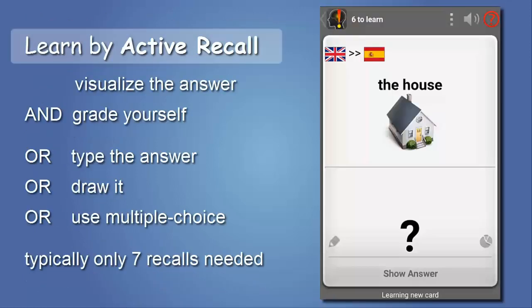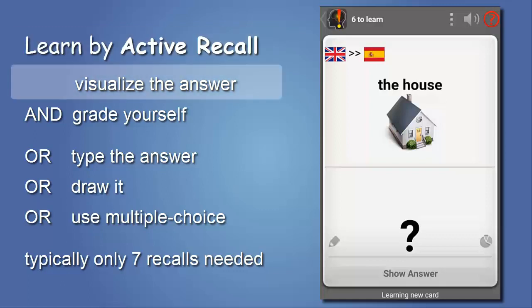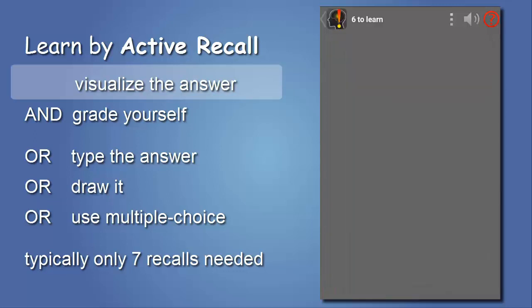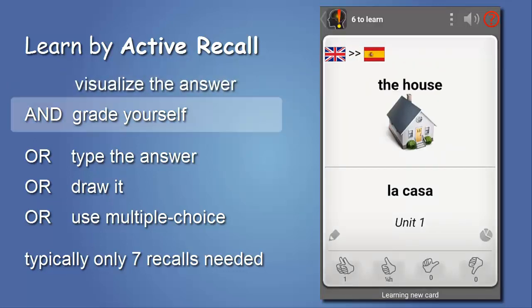Active recall activates the remembering pathways of your brain and stimulates long-term memory formation. For each card, you are presented with a question. You think about the answer, and after turning, you grade yourself how well you remembered it. That can range from easy to not known, and will determine when you see the card again.